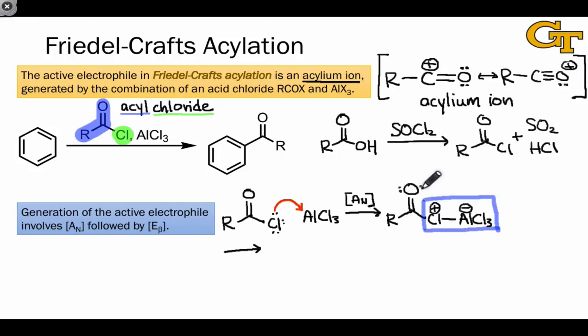Electron flow begins at one of the lone pairs on the oxygen atom. Through sigma star type electron flow, the carbon-chlorine bond breaks and we end up with positive charge on the oxygen atom.